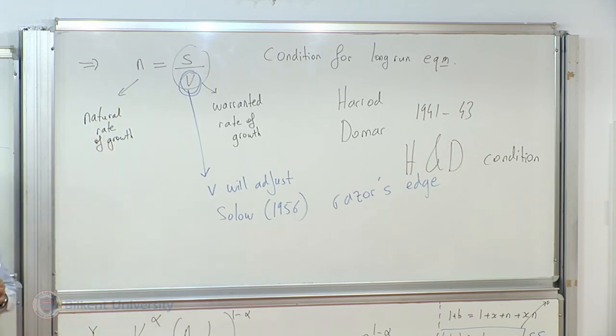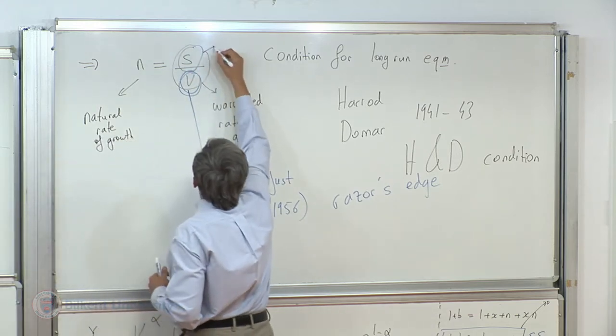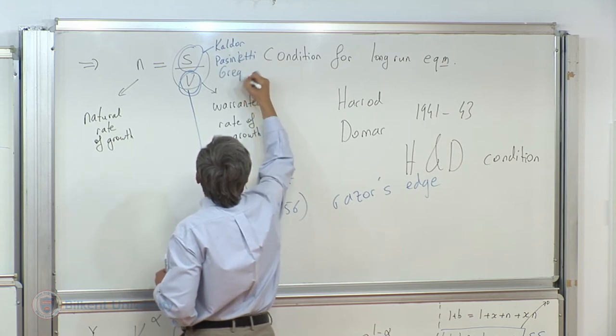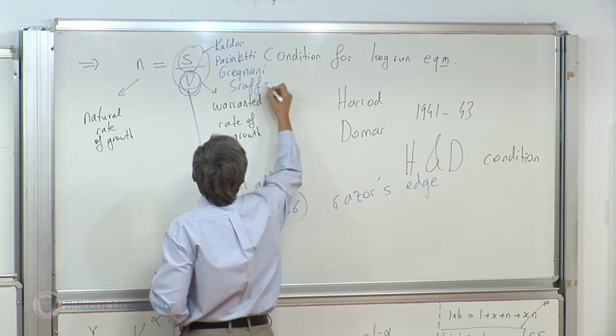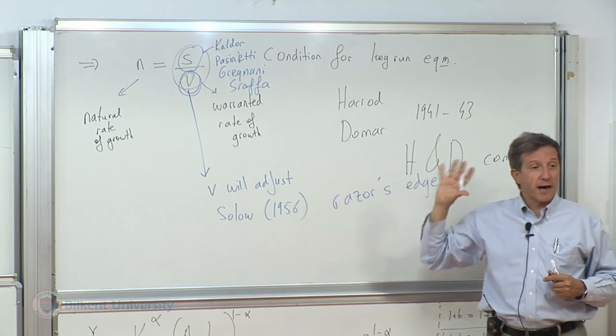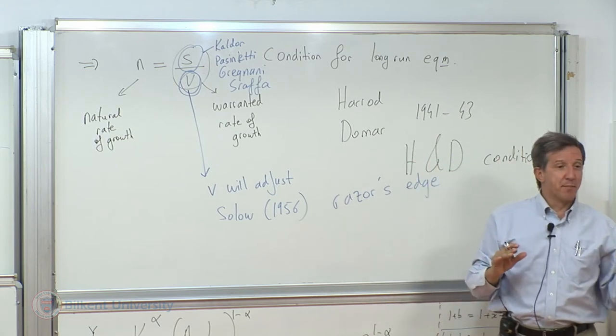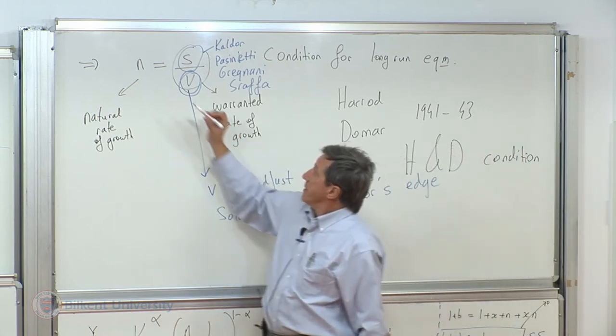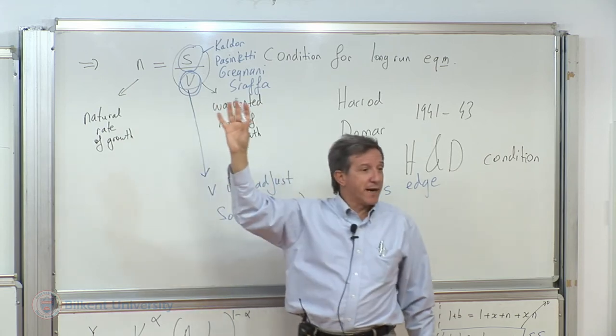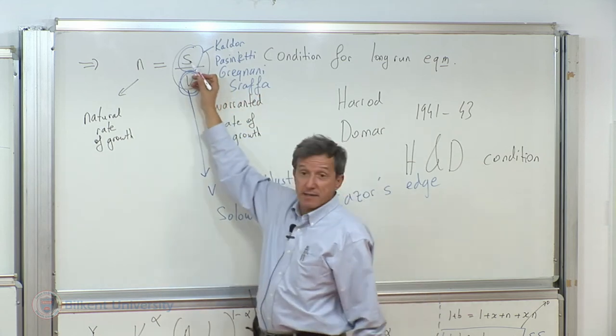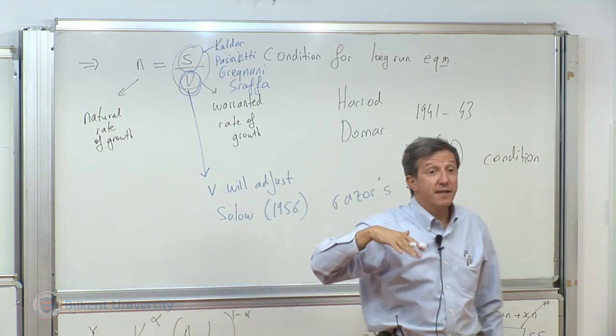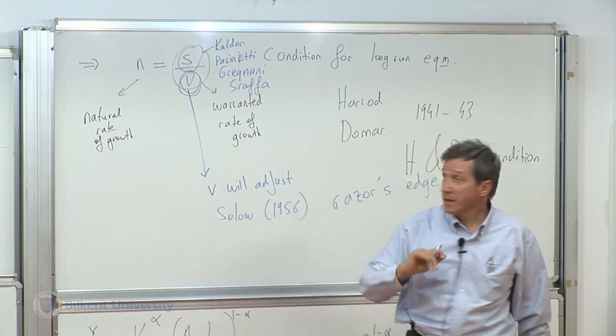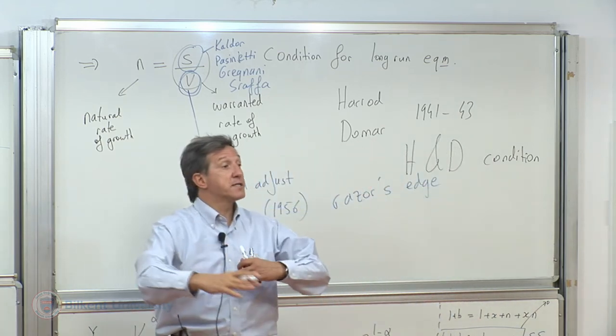And we are going to start studying it starting Wednesday, both empirically first and then theoretically. Then in 1961 and beyond, Nicholas Kaldor, Pasinetti, Greg Nani, Sraffa, a couple of characters, Joan Robinson, a couple of characters stationed in the UK Cambridge, University of Cambridge in UK, United Kingdom, British Cambridge, had argued that even though V may be assumed constant, it may be parameter, it may just behave as it is, saving rate, the average saving rate will adjust. And this is called the Neo Ricardian or Neo-Keynesian school, one of the three schools of thought that I had mentioned. Saving rate will adjust. How? Through changes in functional distribution of income.